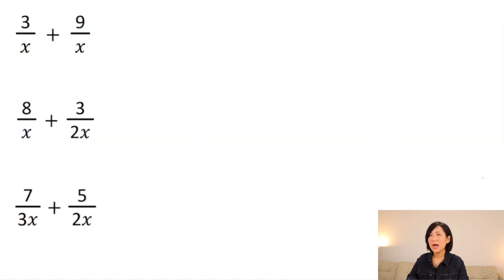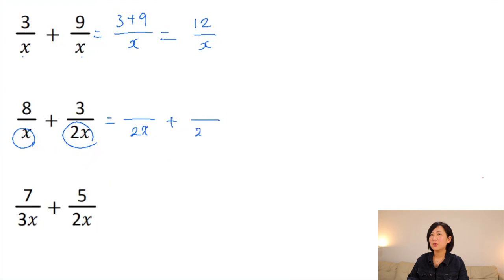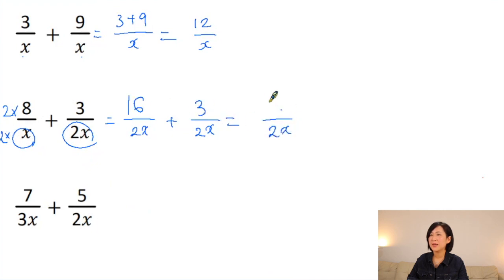Now, what's different about these fractions? They have variables in their denominators. Don't worry — it's the same process. The first fraction has denominator x; since they share the same denominator, just copy it and add the numerators to get 12/x. For the next one with a different denominator, the common denominator is 2x. To make x become 2x, multiply by 2, and also multiply 2 on top, giving 16, then copy the next fraction: 19/2x.